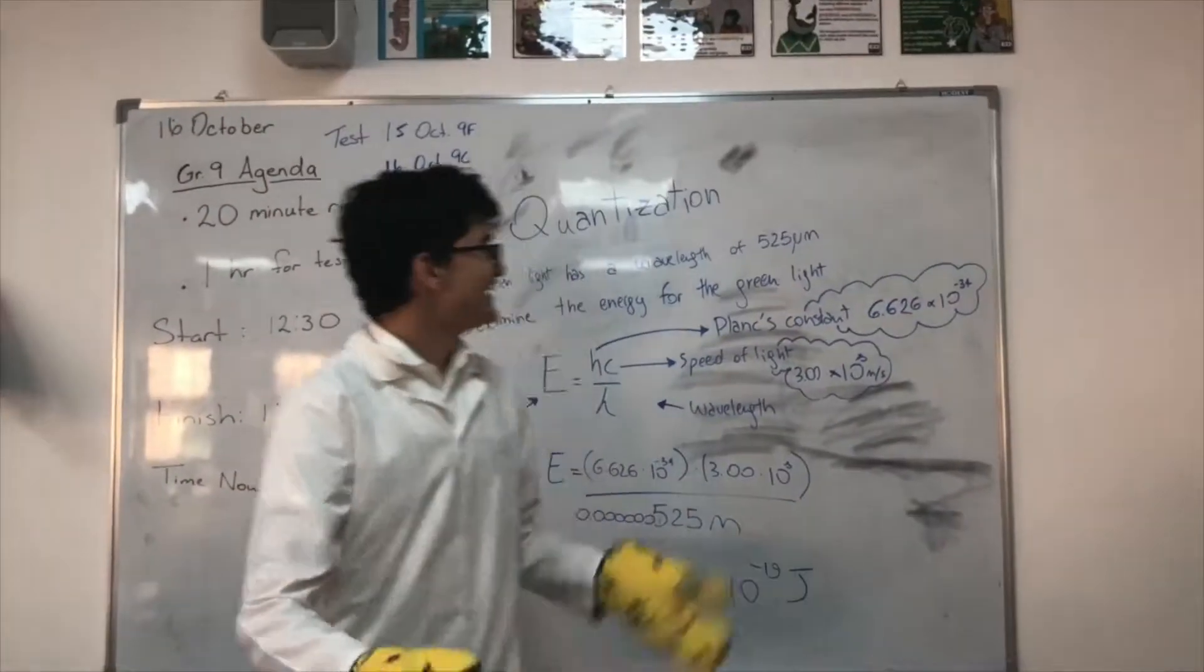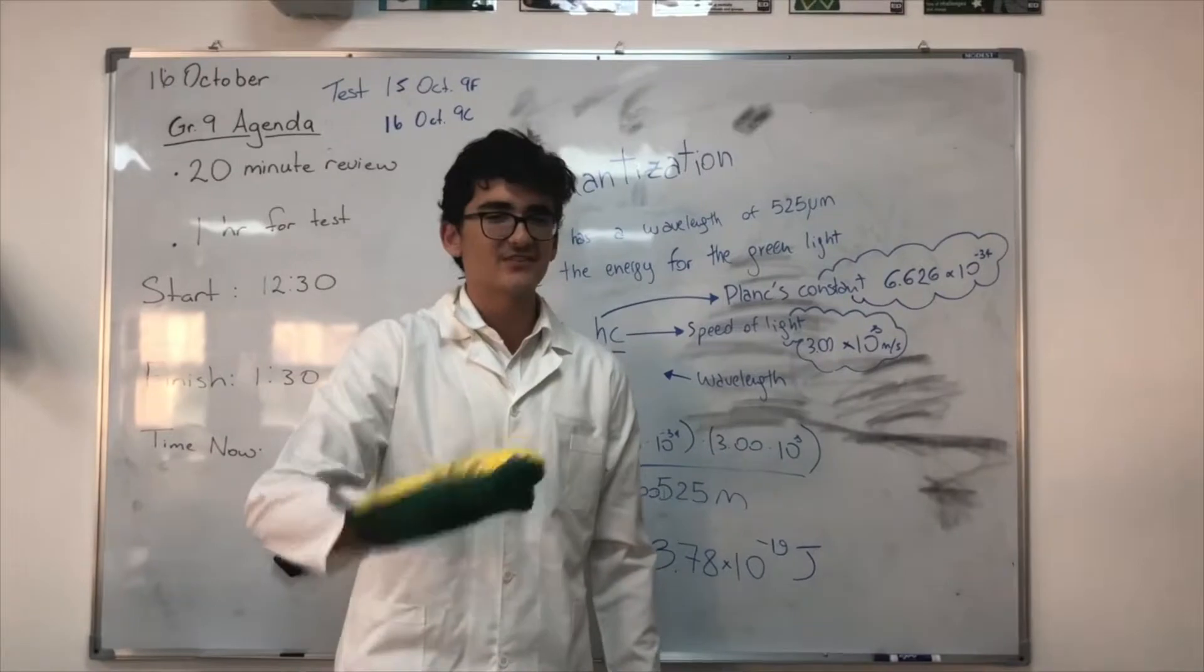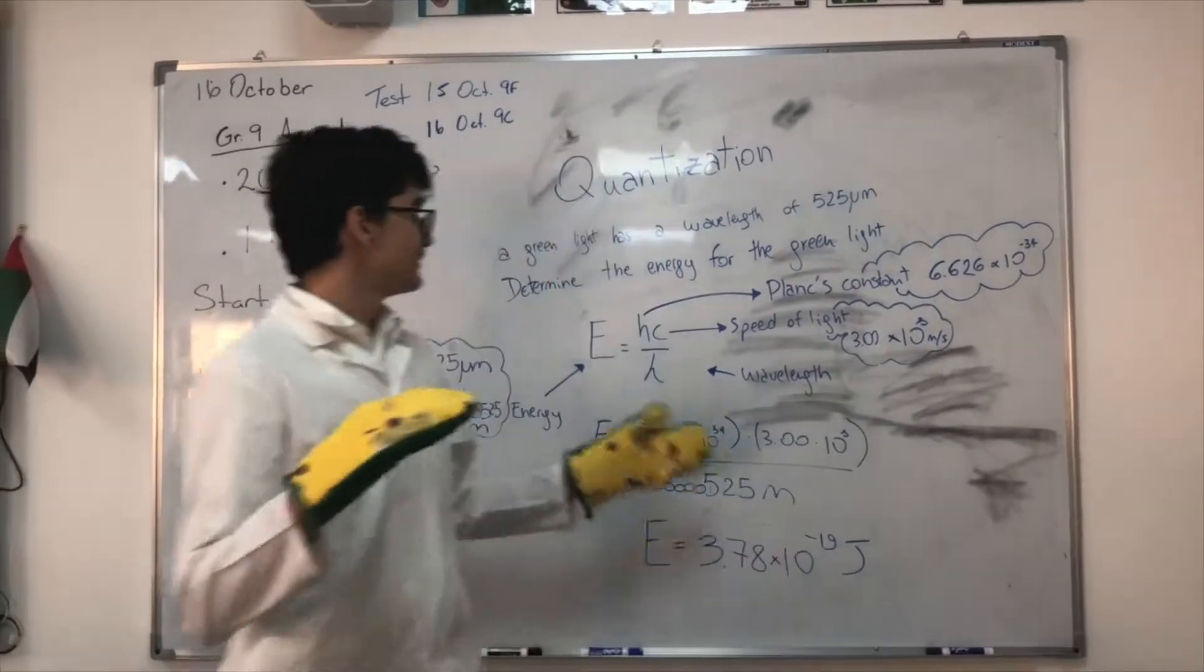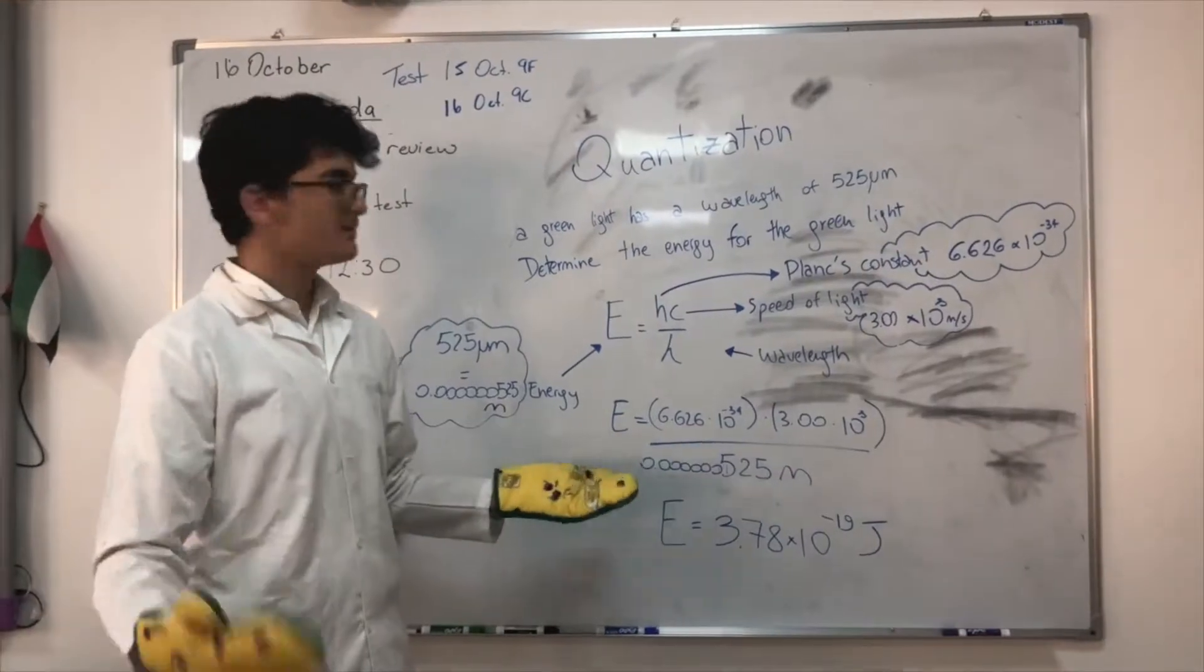Planck's constant is 6.626 times 10 to the power of negative 34. Speed of light is 3 times 10 to the power of 8. And then, you just plug in your numbers.